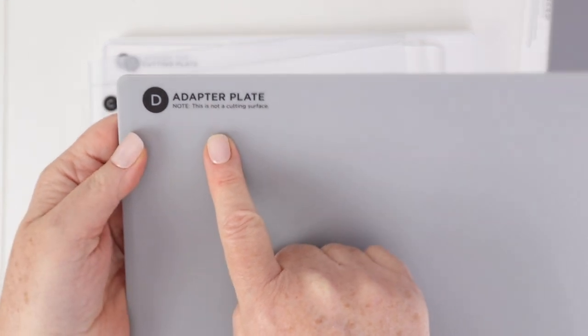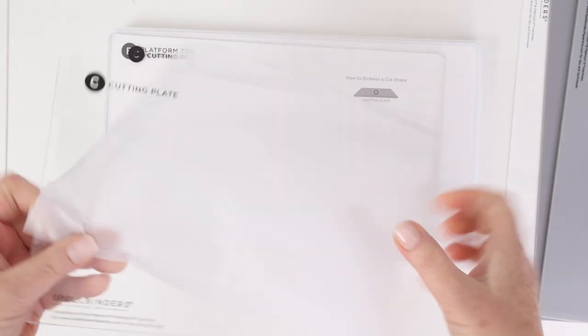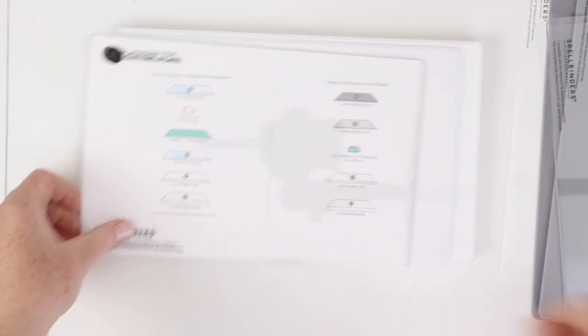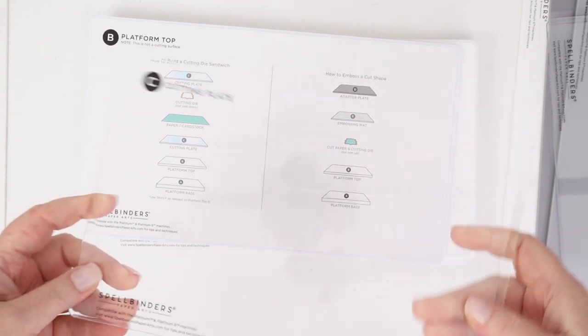This is the adapter plate. So this is not a cutting surface, but that's the plate that you're going to use to 3D emboss. Here is one clear cutting plate and a second clear cutting plate. You can buy those separately as well.